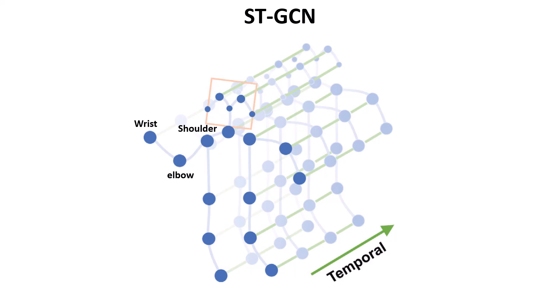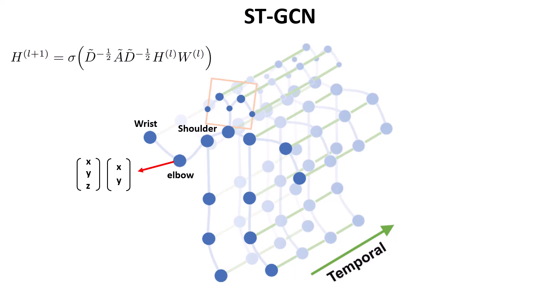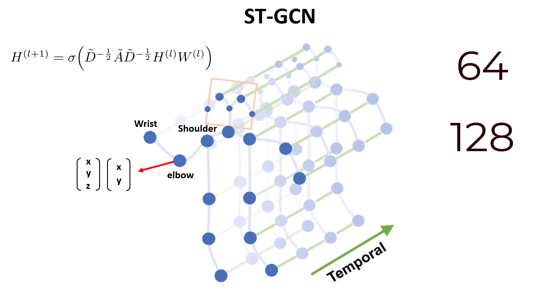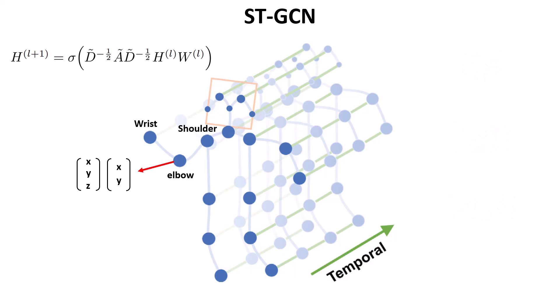Each node is initially represented by a two-dimensional vector like XY, or a three-dimensional vector XYZ. As in graph convolutional neural networks, a weight matrix W maps these two or three-dimensional vectors into a higher dimension — first into 64-dimensional vectors, then 128, and finally 256-dimensional vectors at the end layers of the network.